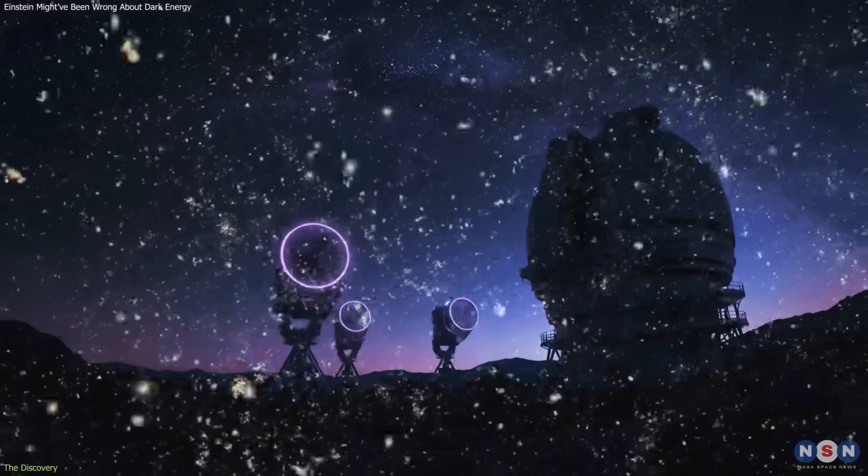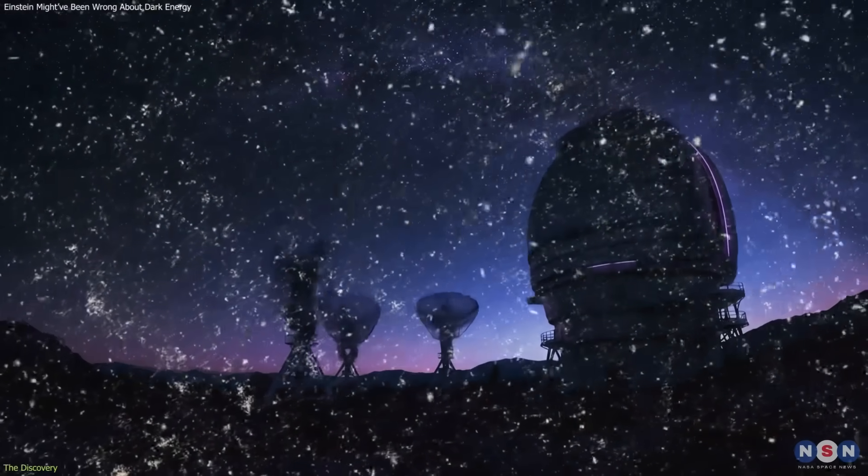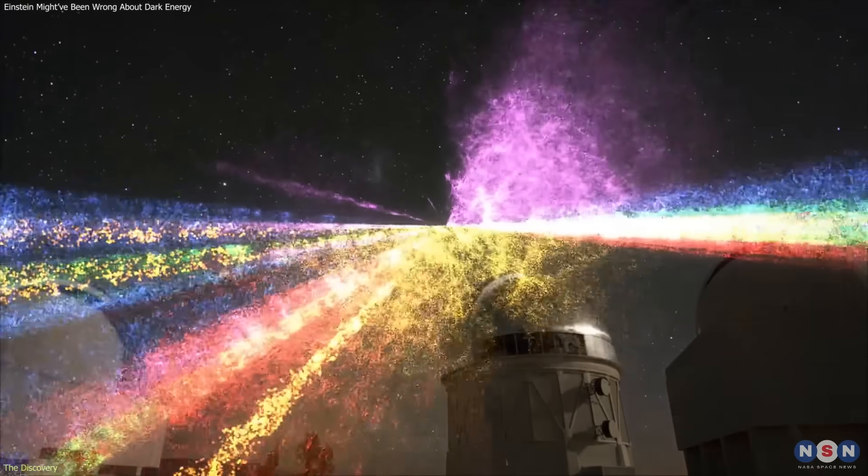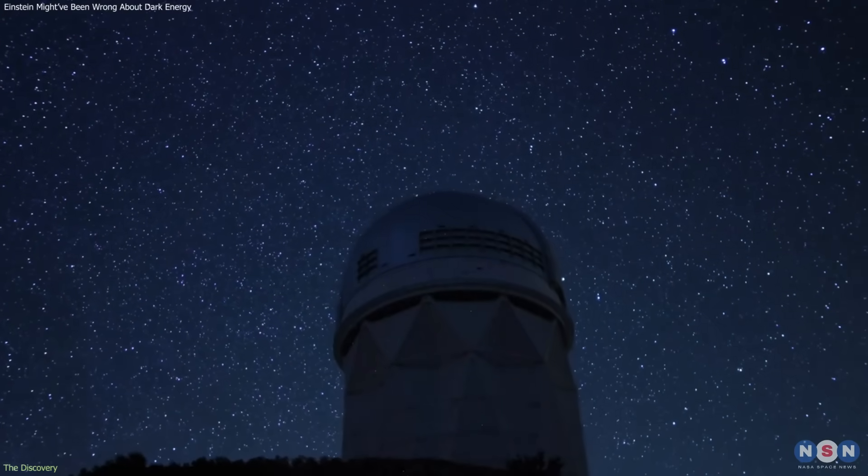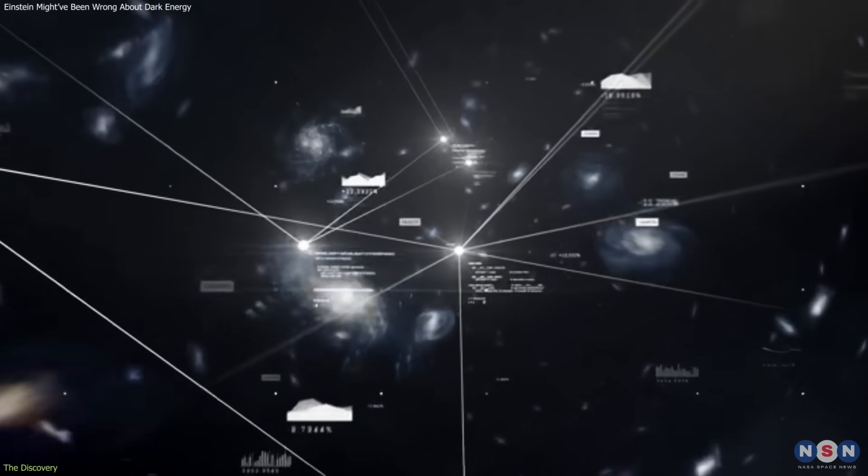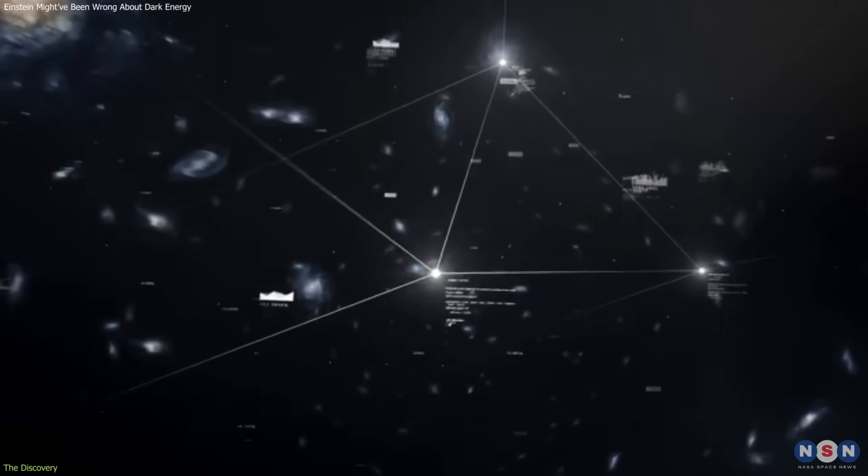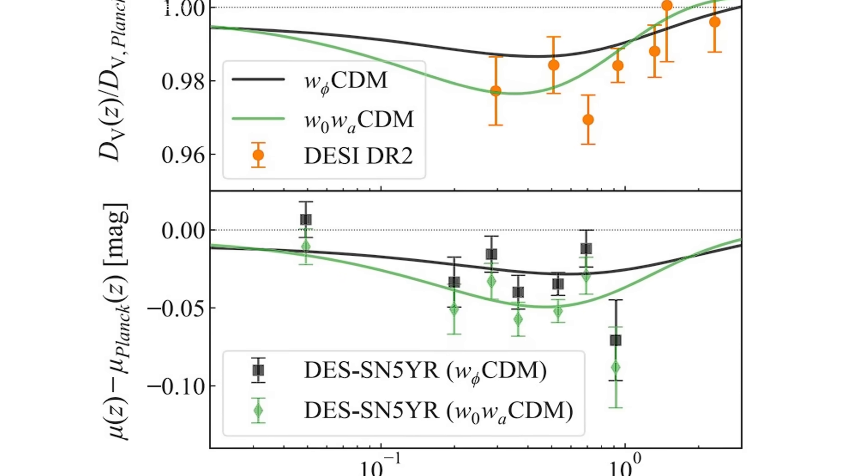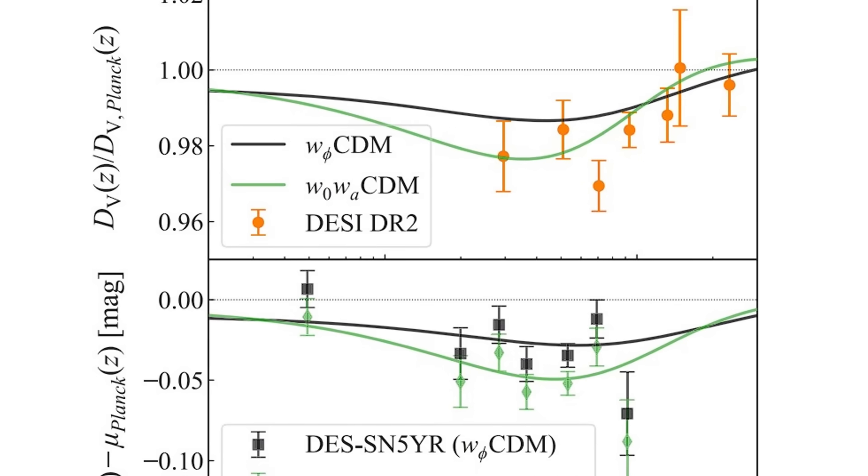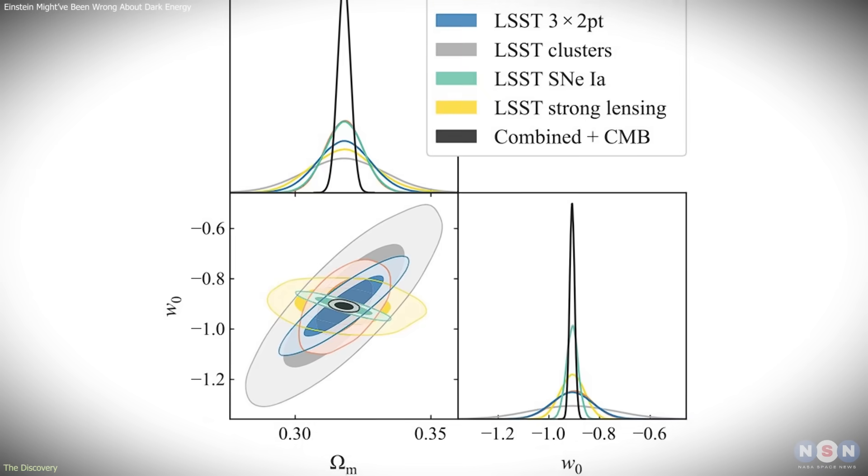recent analyses combining data from multiple large-scale surveys have begun to reveal small but consistent discrepancies. The Dark Energy Survey and the Dark Energy Spectroscopic Instrument, along with observations from the Planck mission, have mapped the universe's expansion with unprecedented precision. When these datasets were compared, researchers noticed that the rate of cosmic expansion in the recent universe appeared slightly slower than predicted by the standard model. The difference is subtle, roughly a 10% decrease in dark energy density over several billion years, but statistically meaningful.